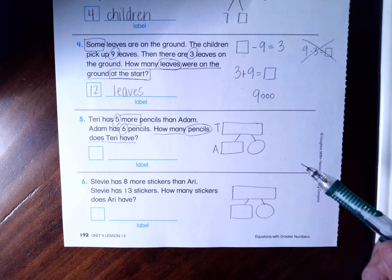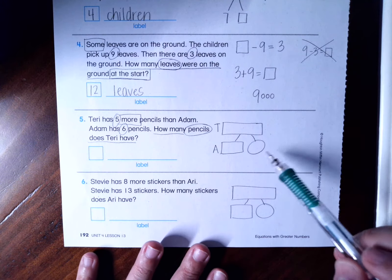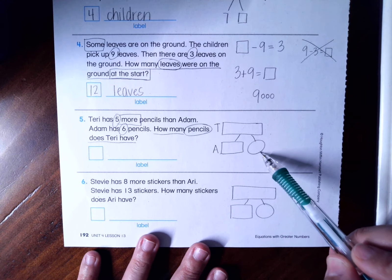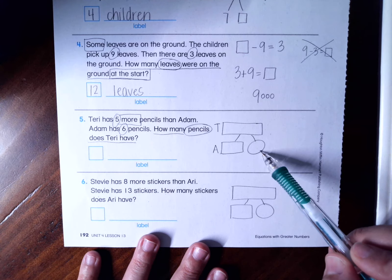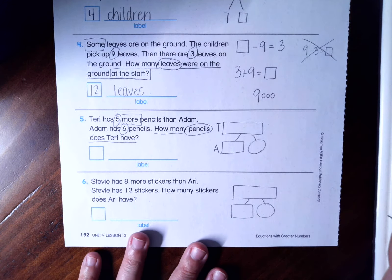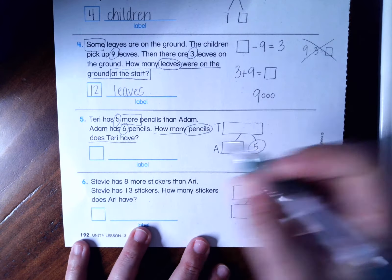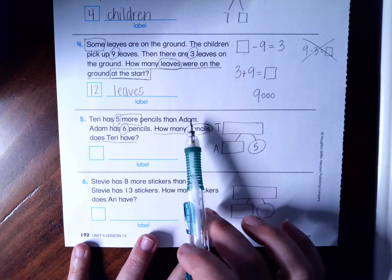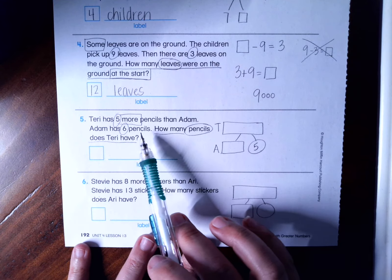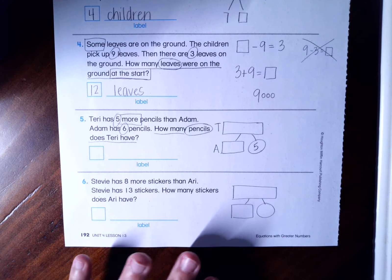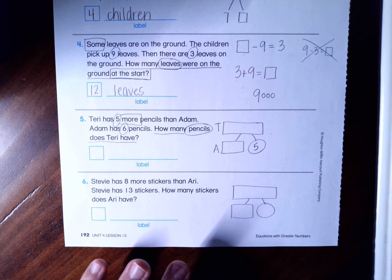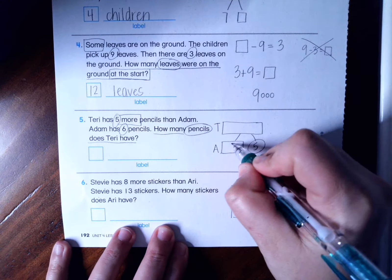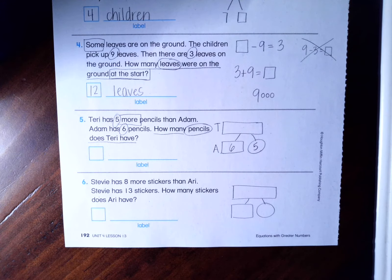Now, if you also remember from a long time ago, the number that goes in the circle either always has more or less after it. So which number has more or less after? The five, right? There's the word more. Now I have the number six. It says, Adam has six pencils. So where does that go? It goes in Adam's box. That's exactly how many he has.